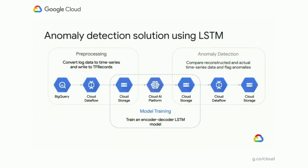The solution consists of three steps. In the pre-processing step, we convert log data to a time series TF record formatted data set, and we store it in cloud storage. Once data lands in cloud storage, we begin the model training step, for which we use the Cloud AI Platform training API. This is where the encoder-decoder LSTM model gets created and stored in cloud storage again. A parallel Dataflow pipeline consumes this LSTM model, scores each incoming data record, creates both a reconstructed and actual time series, compares the two, and flags differences and anomalies. The output is again stored in cloud storage.